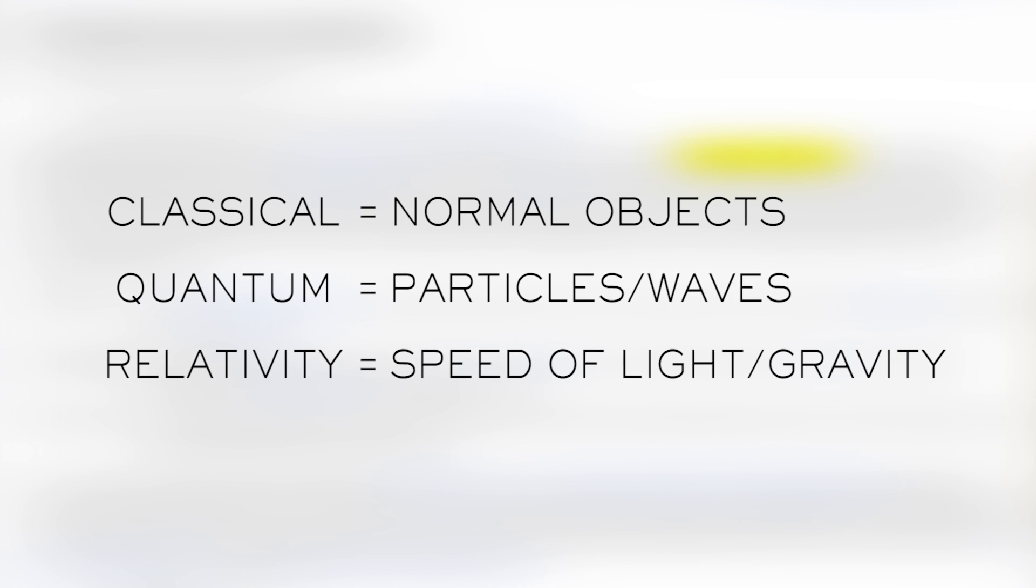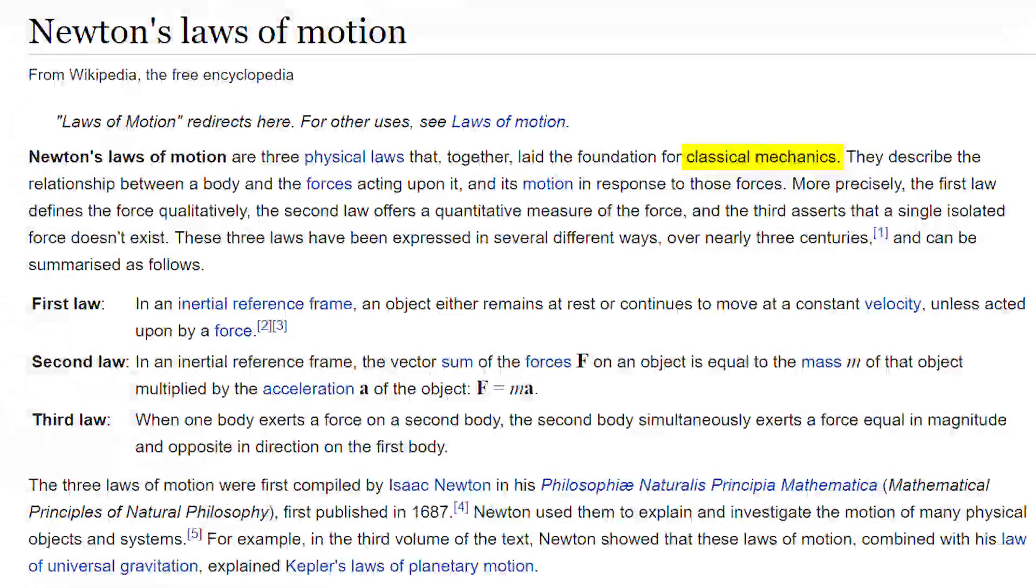Now, interesting to note about Newton's three laws of motion is that they laid the foundation for something called classical mechanics. There's that word, classical. Based on what I told you before, you can deduce that classical mechanics deals in laws and theories related to normal physical objects. Questions such as, if I drop an object from a certain height, how long will it take to reach the ground? Or, if you throw a ball at a certain angle, how far will it reach? And to use Newton's second law of motion as an example, if I apply a certain amount of force to an object with this much mass, what will the acceleration be? All deal in classical mechanics.